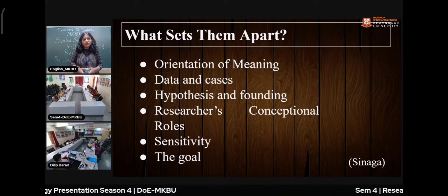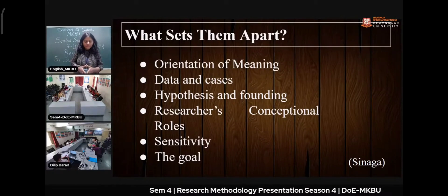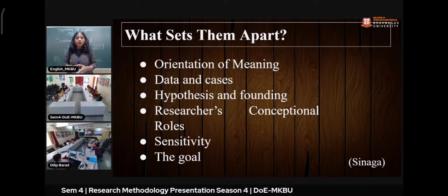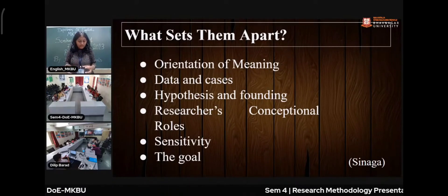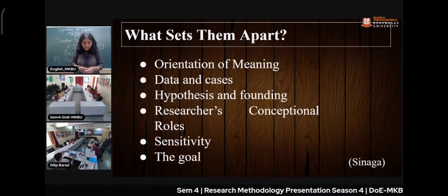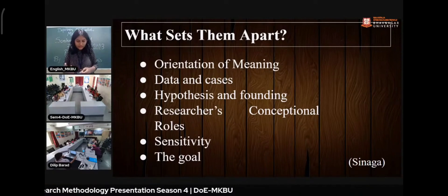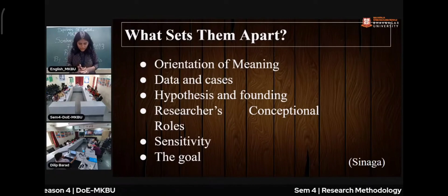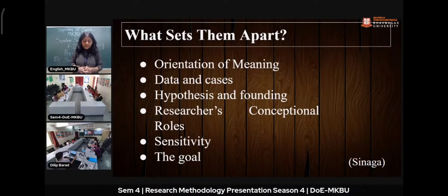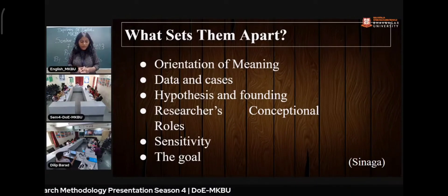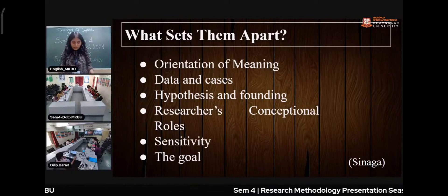Another point is the researcher's conceptual role. In qualitative research, the researcher plays a more personal, interpretive role. In quantitative research, the researcher acts as a designer — the data structure is already set, and the researcher's role is how to design and use that data. Sensitivity is also higher in qualitative research. The goal in qualitative research is descriptive, while in quantitative research the goal involves finding specific variables and measurements.